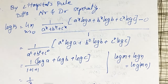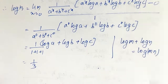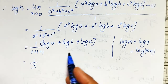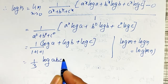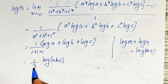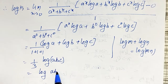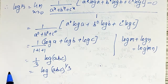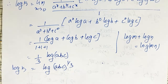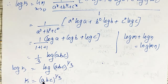Therefore, log k = (1/3)·log(abc), which using the reverse property gives log k = log(abc)^(1/3). Comparing both sides, k = (abc)^(1/3). This is the required answer.